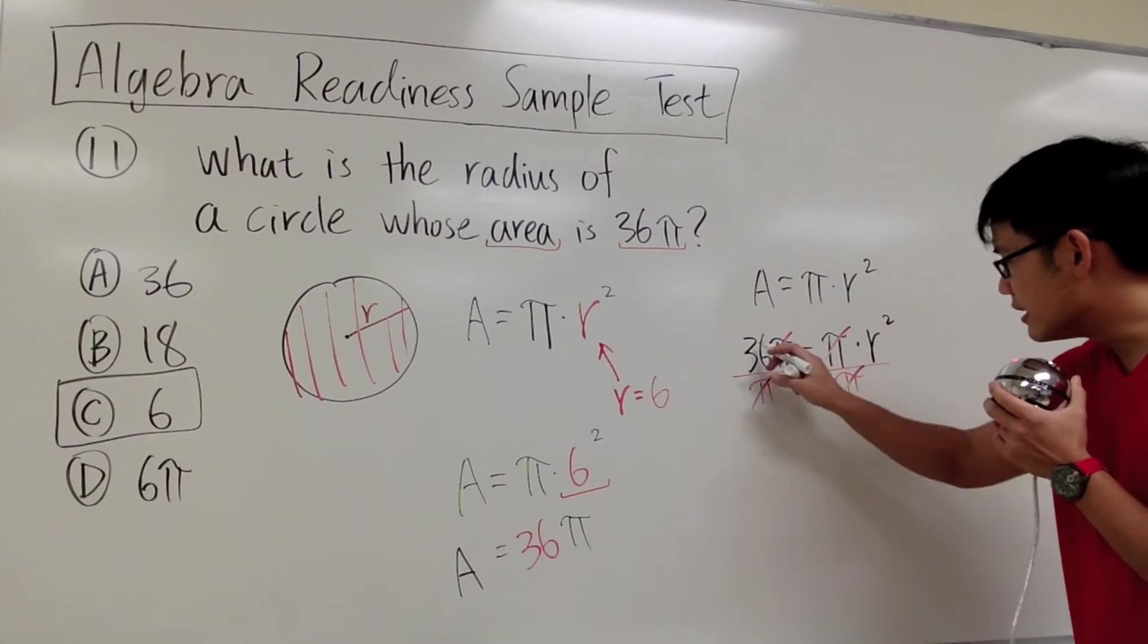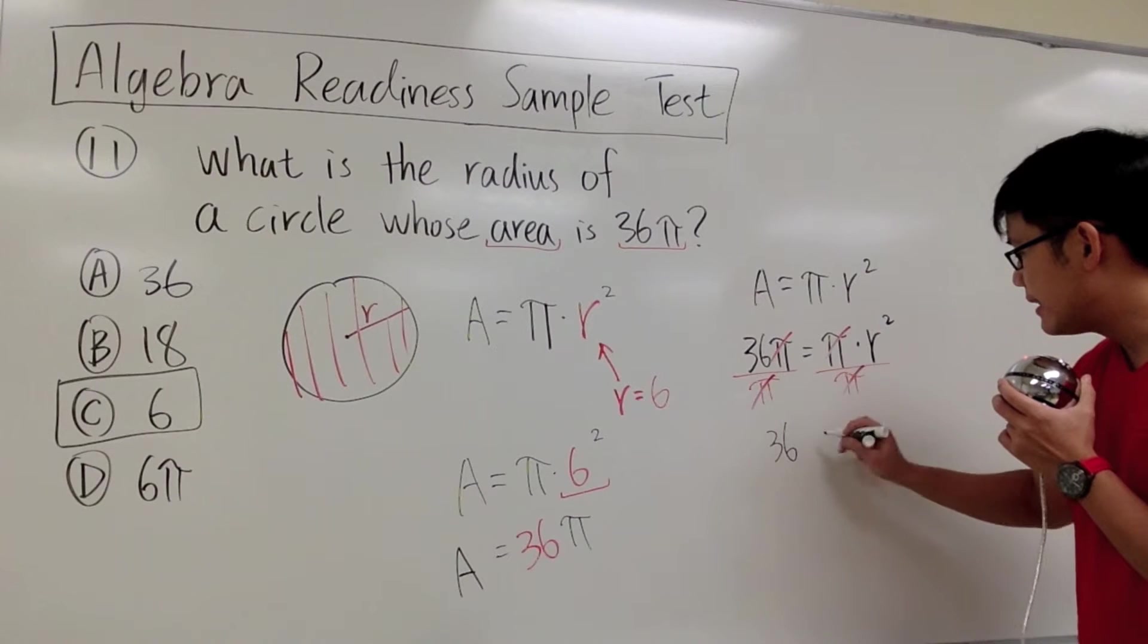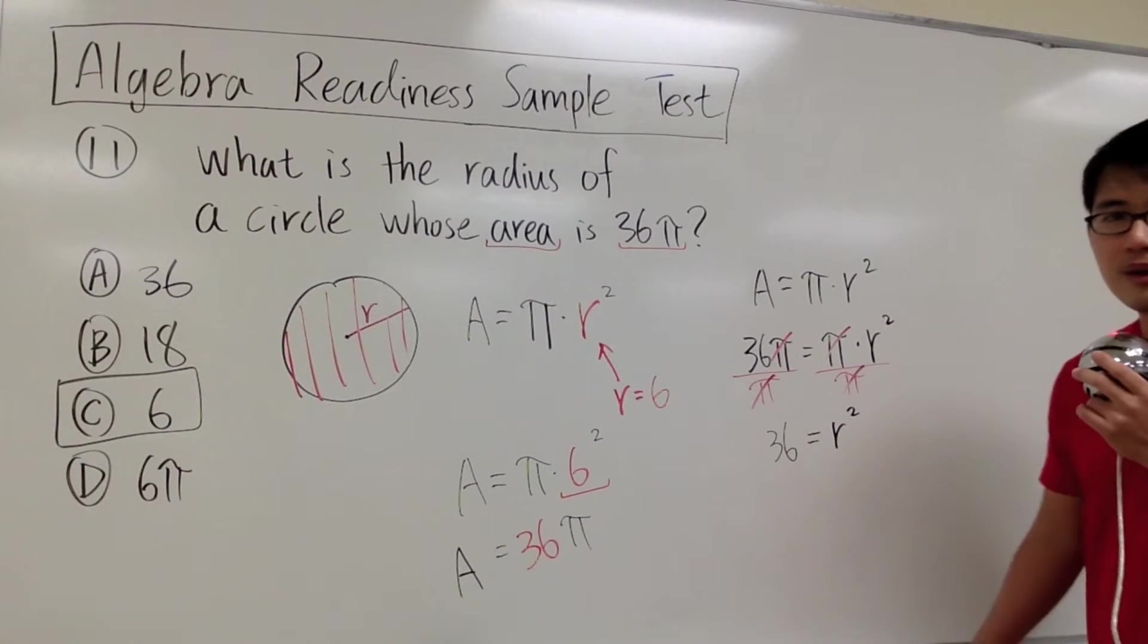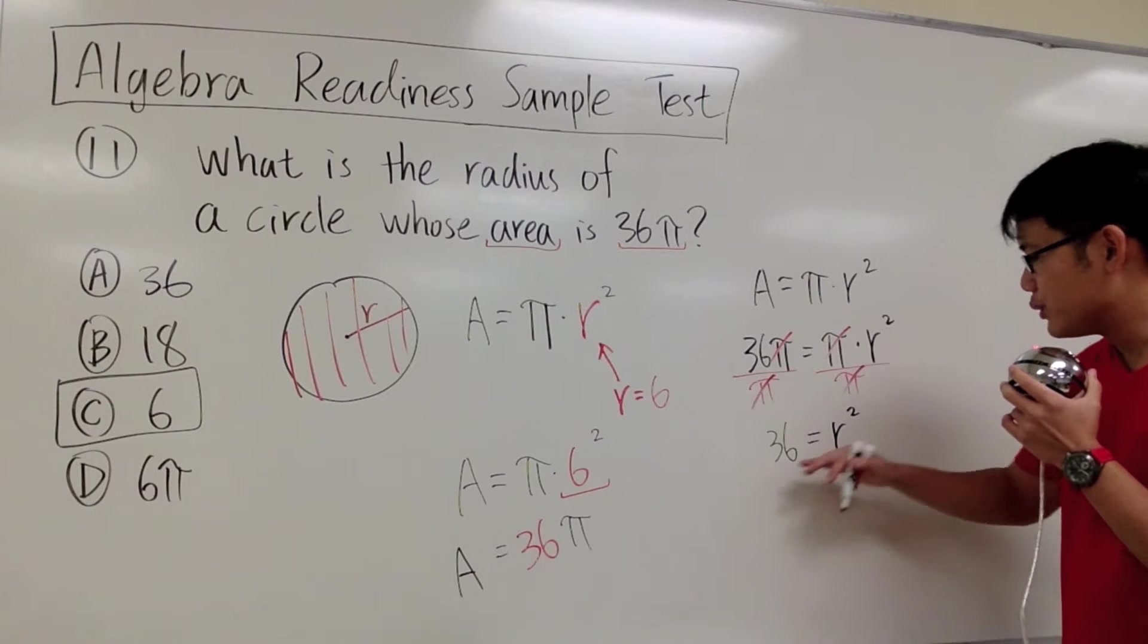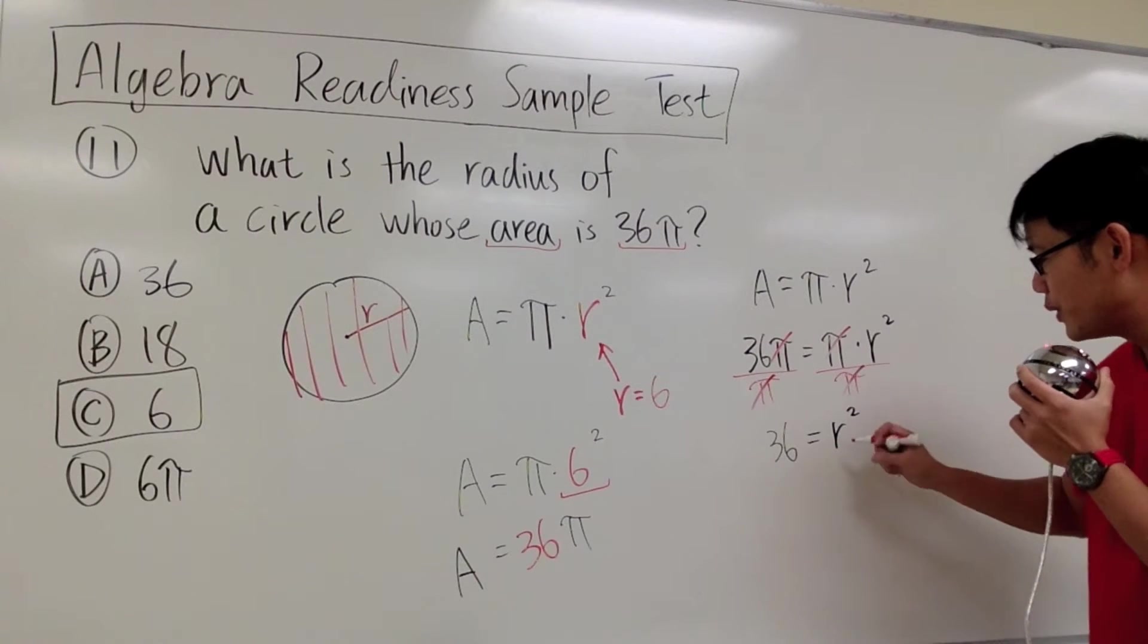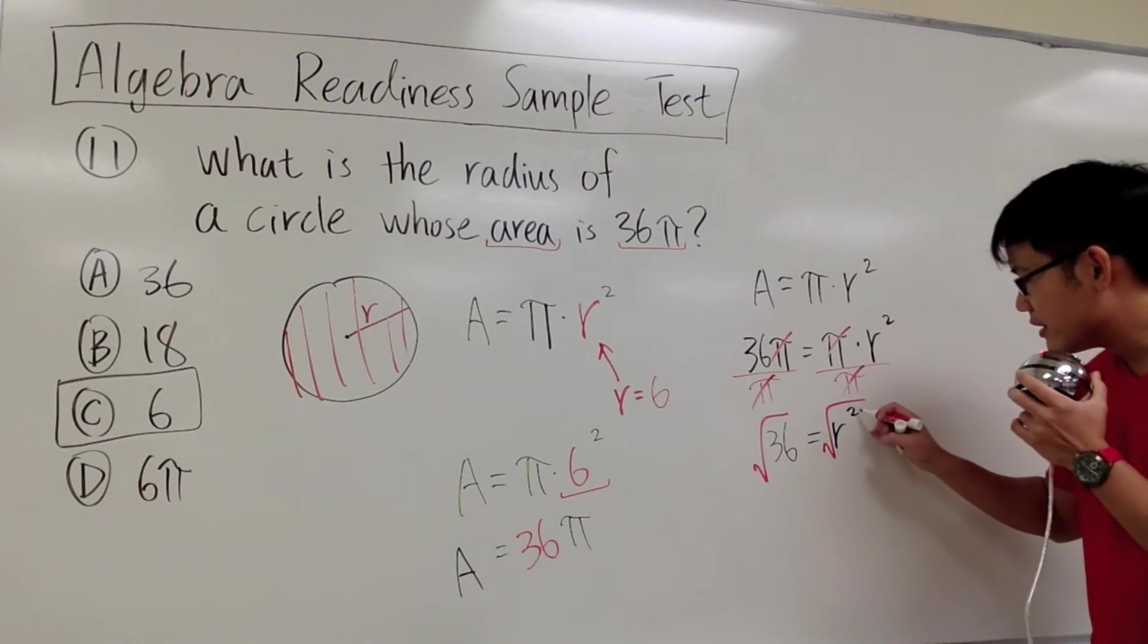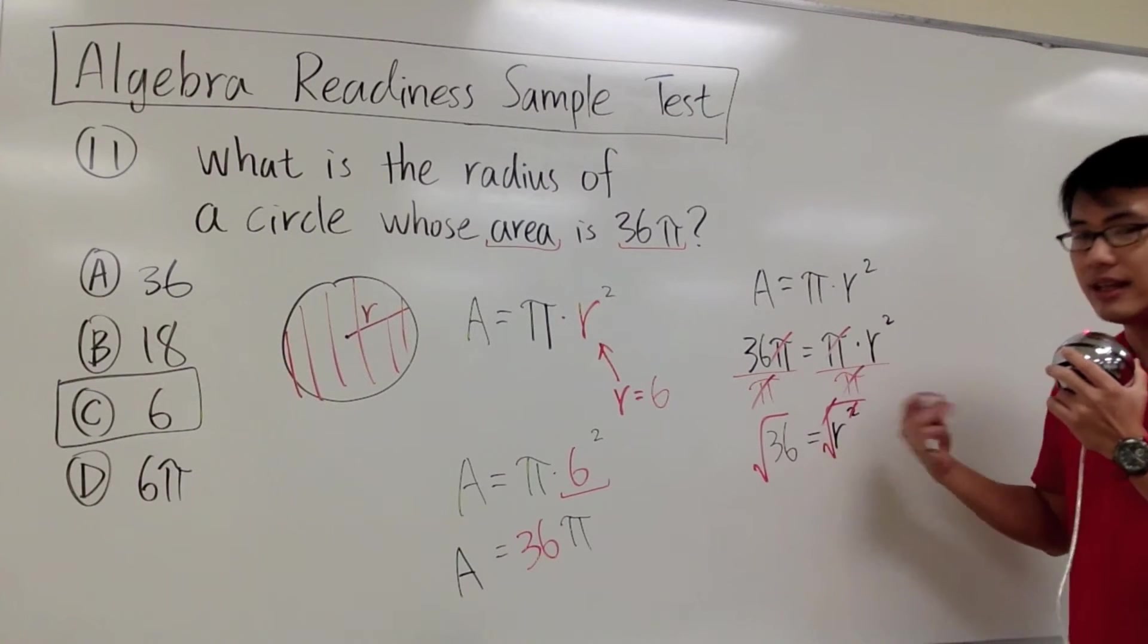And then what we will get is the 36 is right here, and then that will be equal to some number r to the second power. And then r² = 36. To solve this, what we do is we square root both sides, because the square and the square root can cancel each other out.